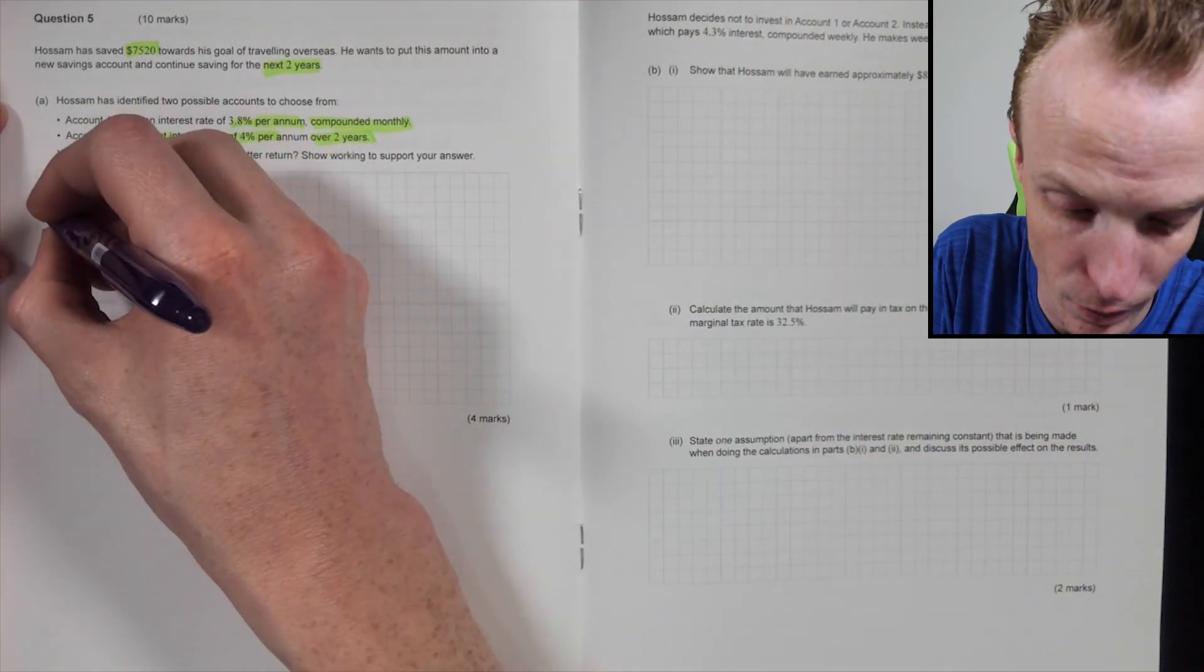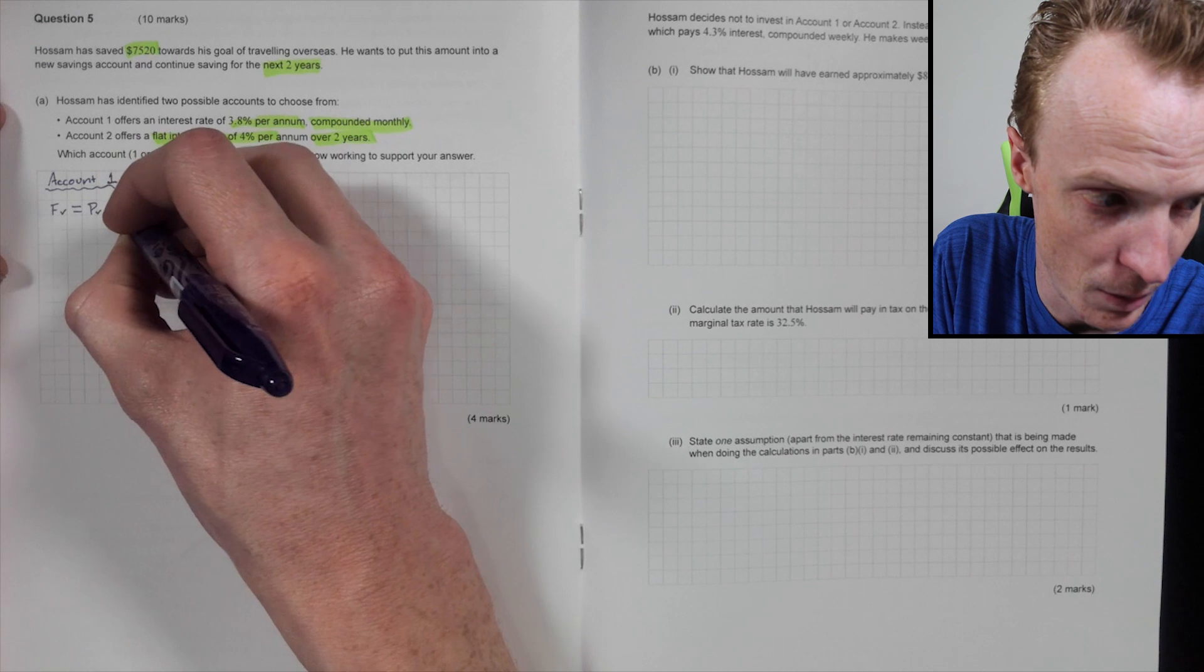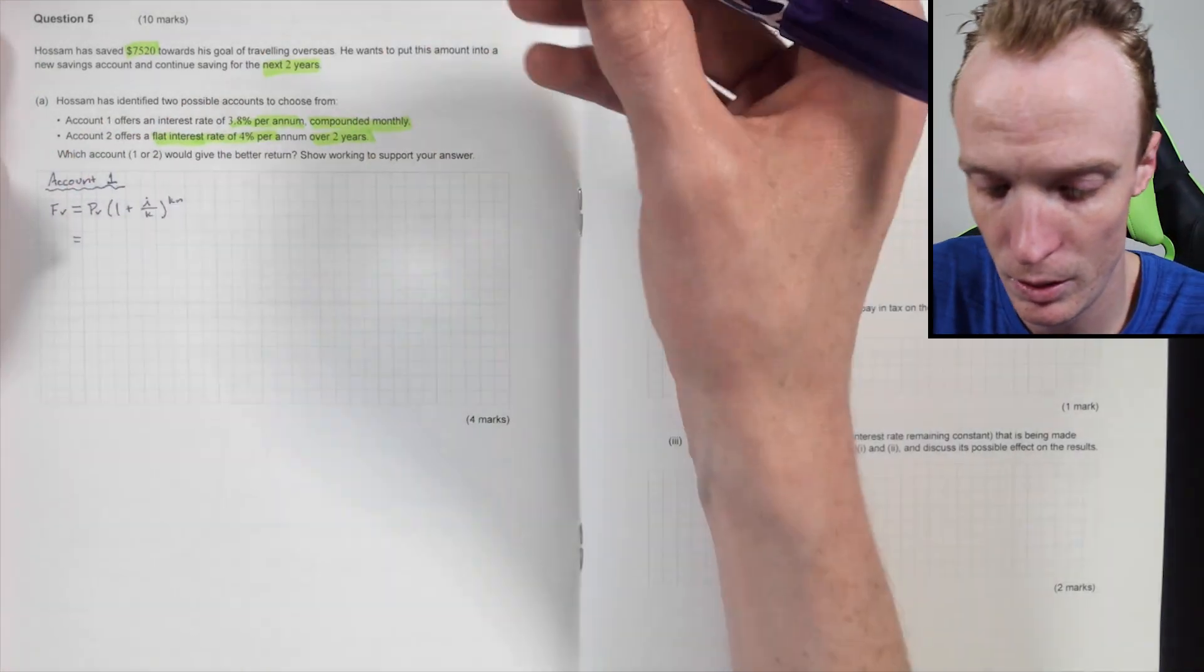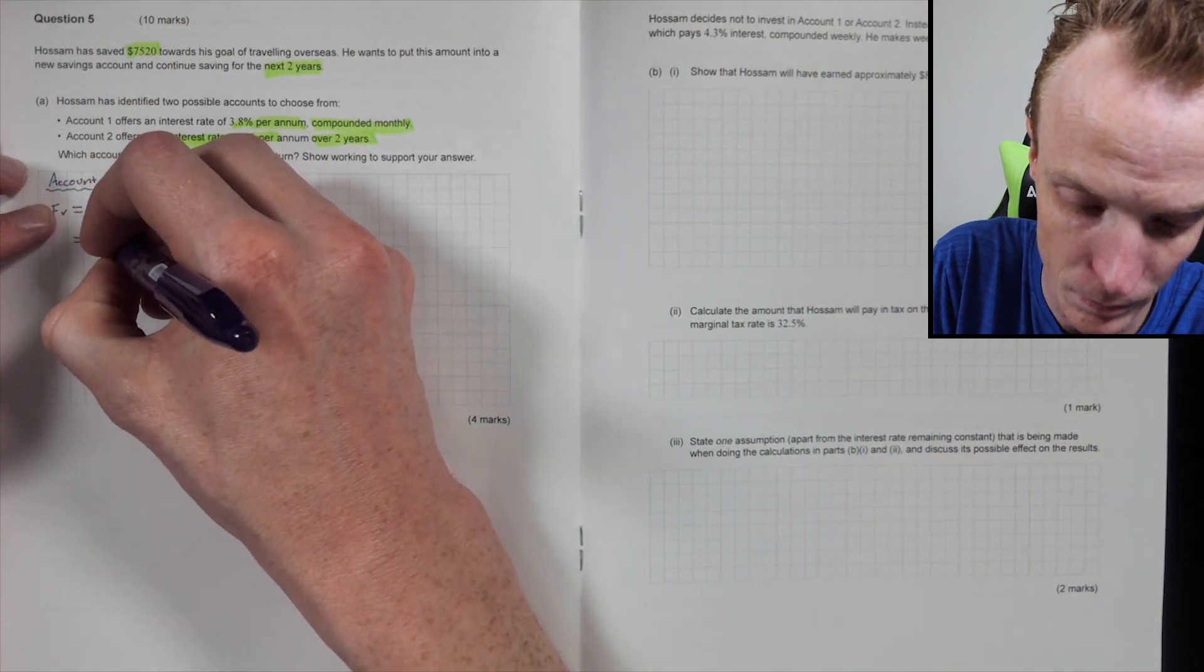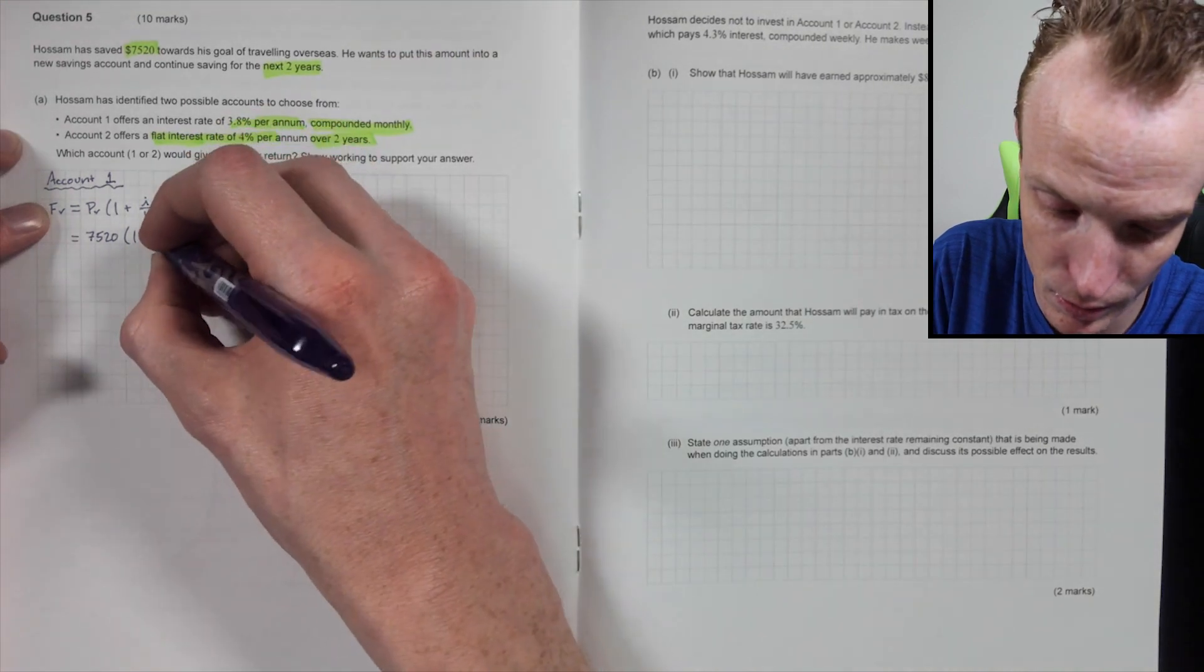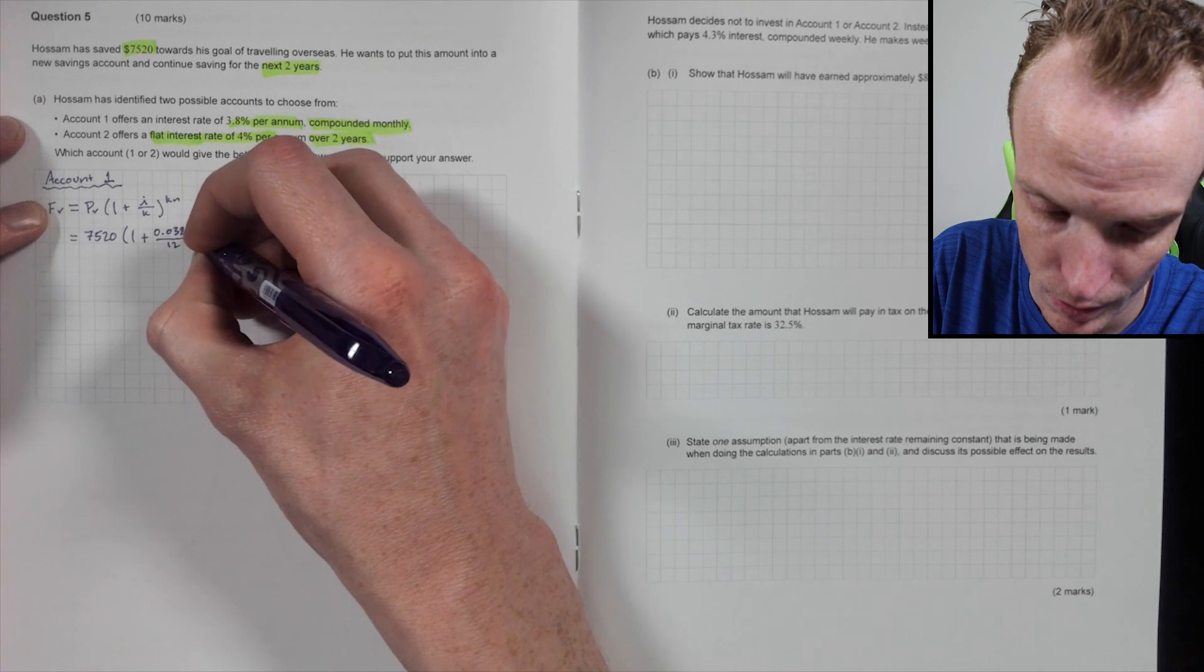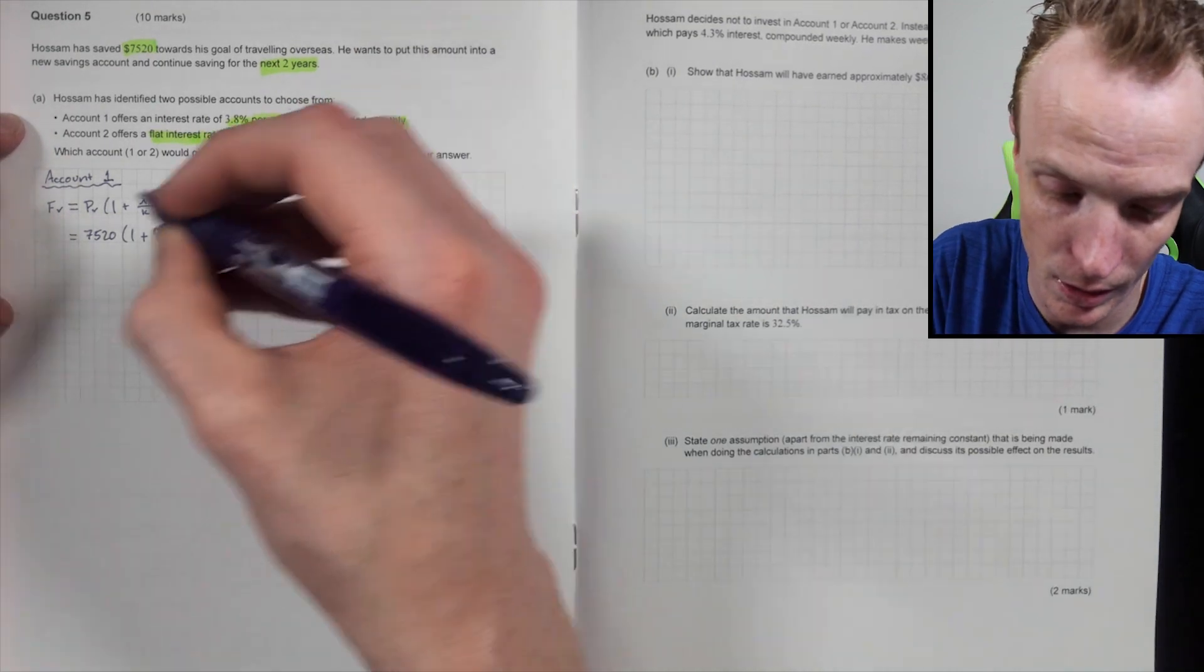Let's just do through the formula. So future value, I mean you could do it via the calculator if you wanted, but it'll be present value multiply by 1 plus I over K to the power of KN. Now here, my future value, my present value is $7,520 multiplied by one plus my interest rate of 0.038, all divided by its compounding monthly. So K is 12, K is 12 multiplied by N, which was two years.